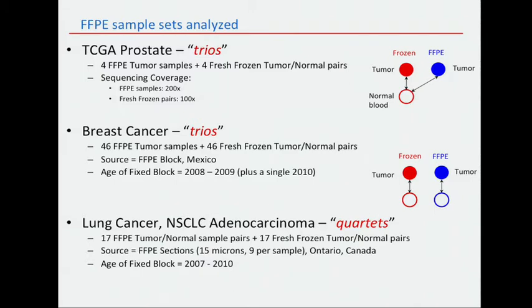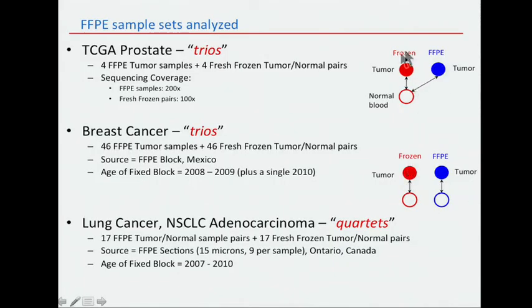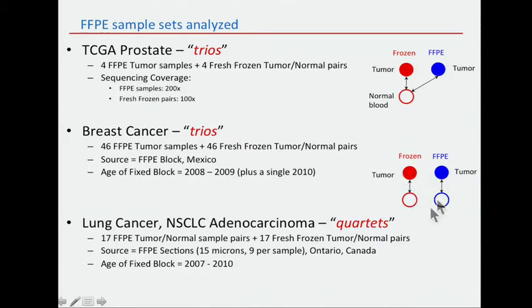So what datasets do we have? We have TCGA prostate FFPE tumor samples, the fresh frozen tumor, and the blood normal — we call these trios. We have the tumor from the frozen, the tumor from the FFPE, and the blood normal. When we call mutations, we can compare the frozen to the normal or the FFPE tumor to the normal. There's also breast trios. And there's lung cancer data from the Broad — 17 FFPE tumor-normal pairs where we have both FFPE and frozen tumor and normal, so those are quartets.